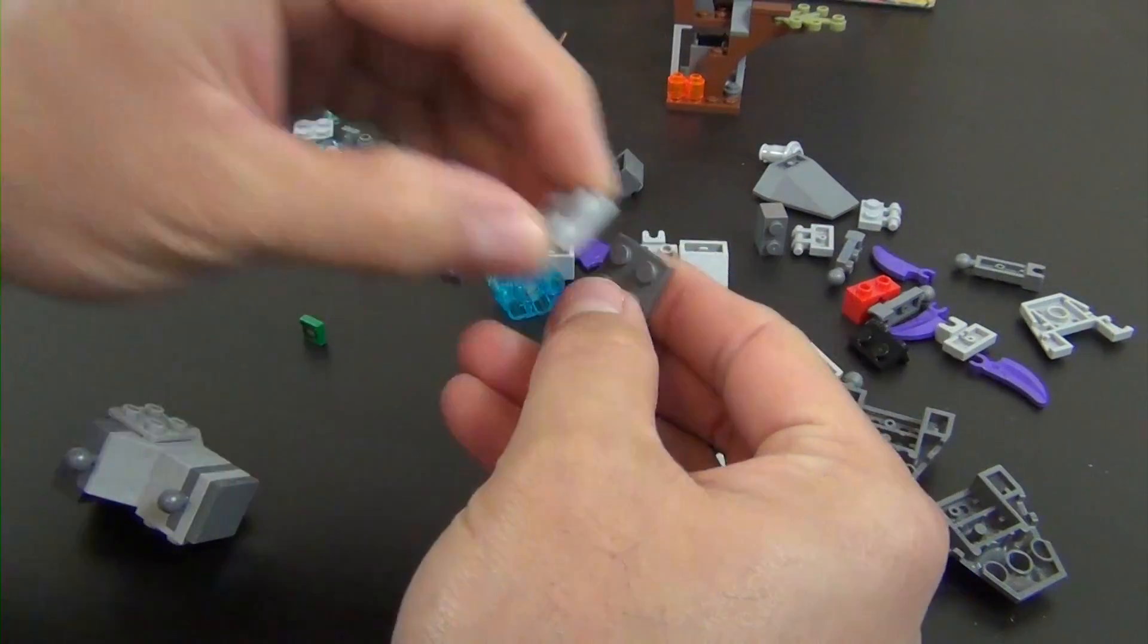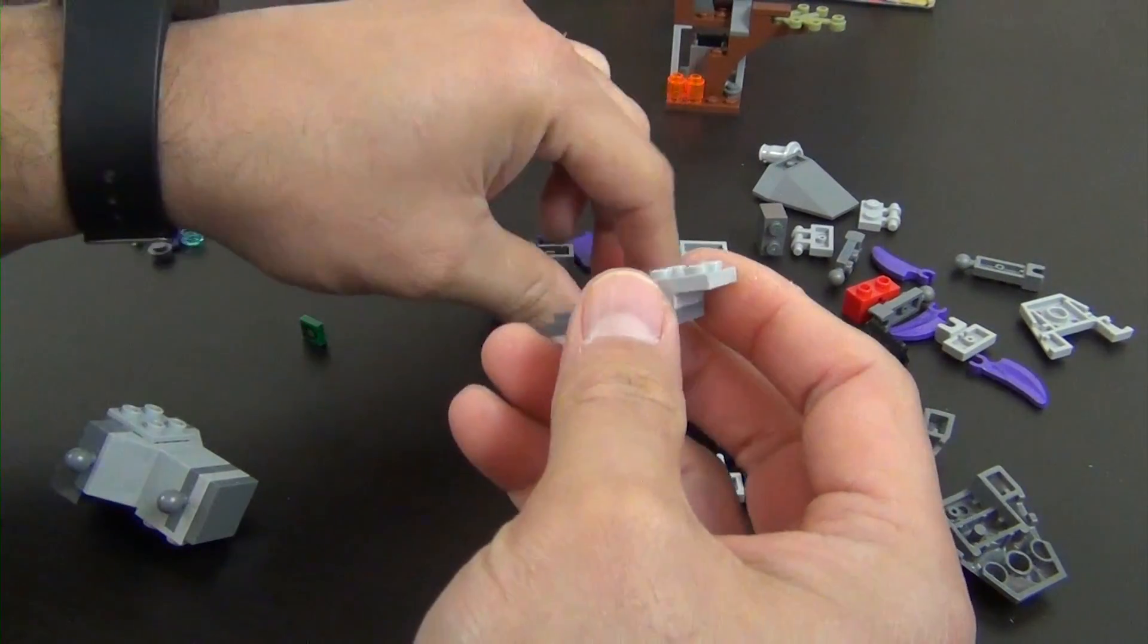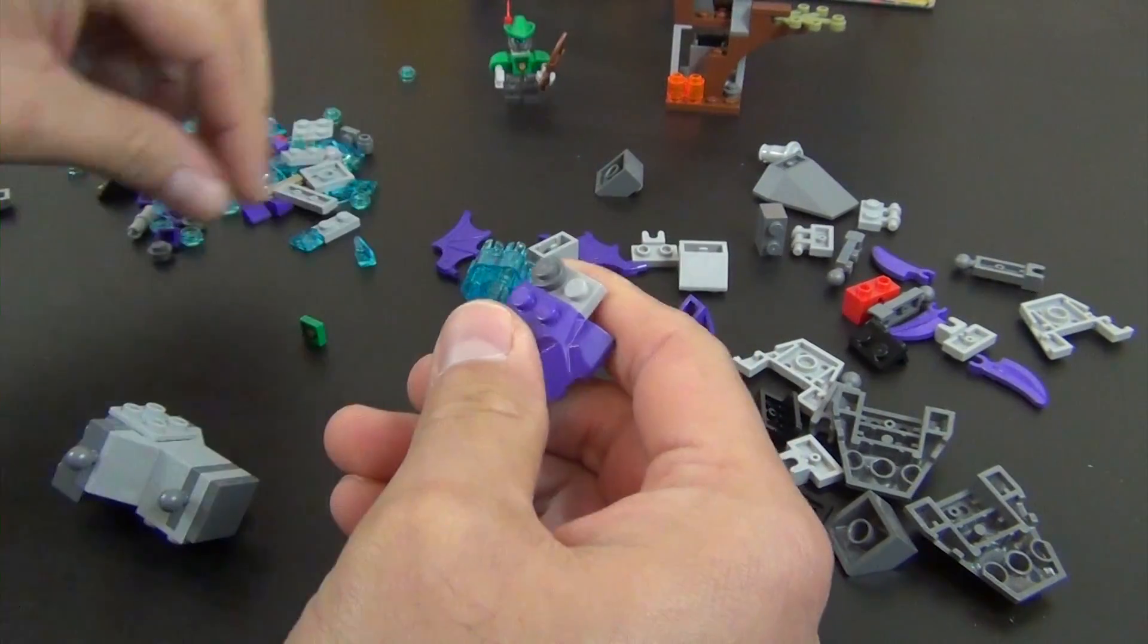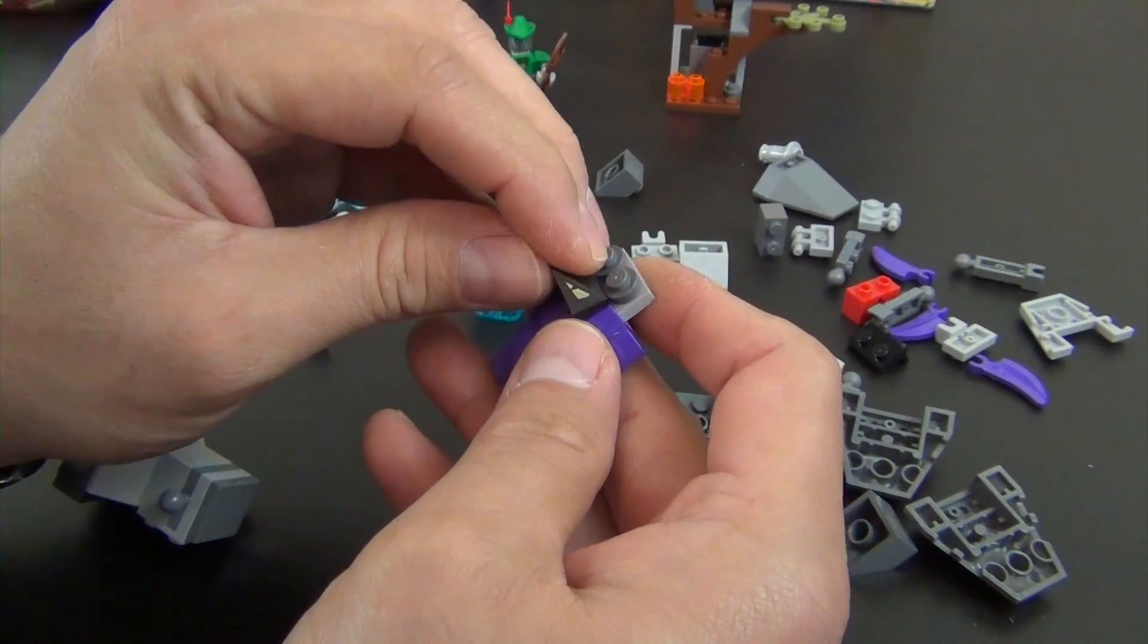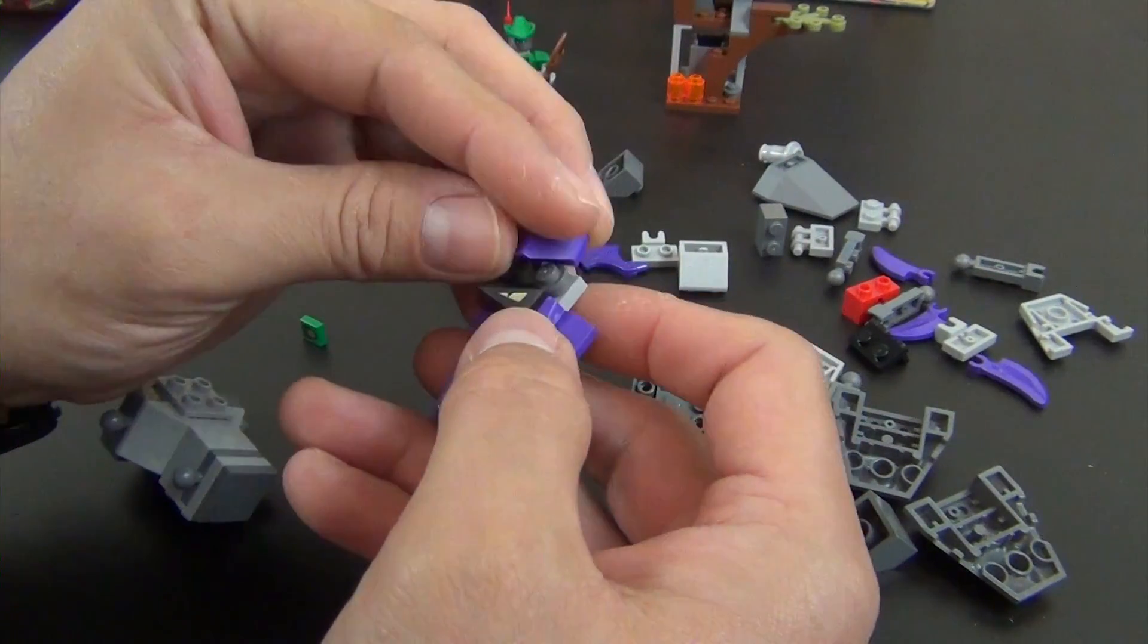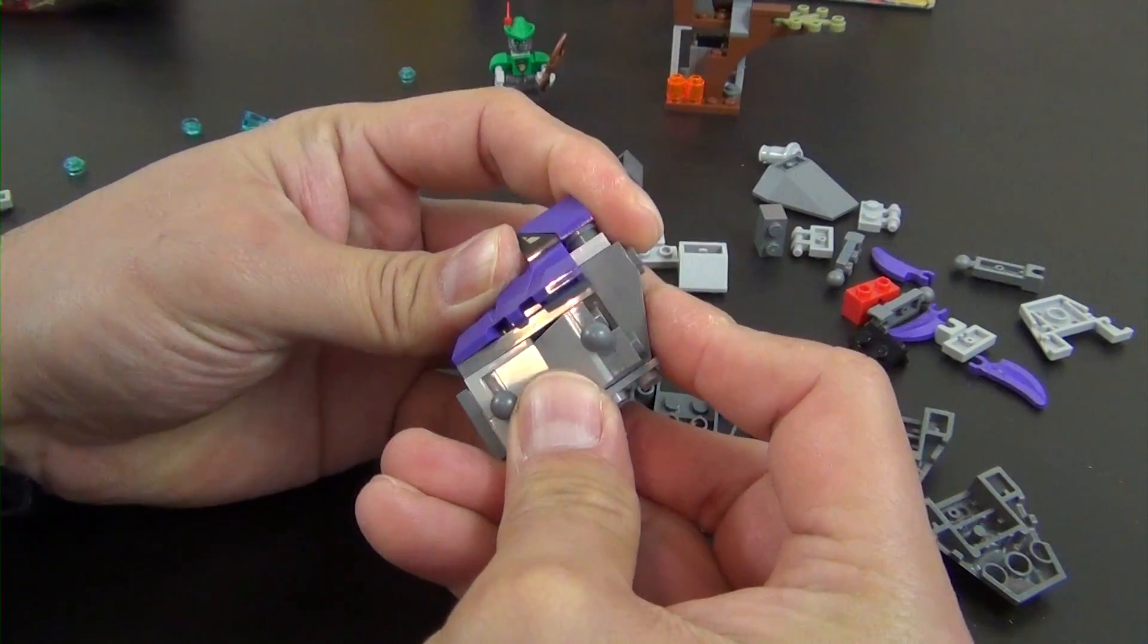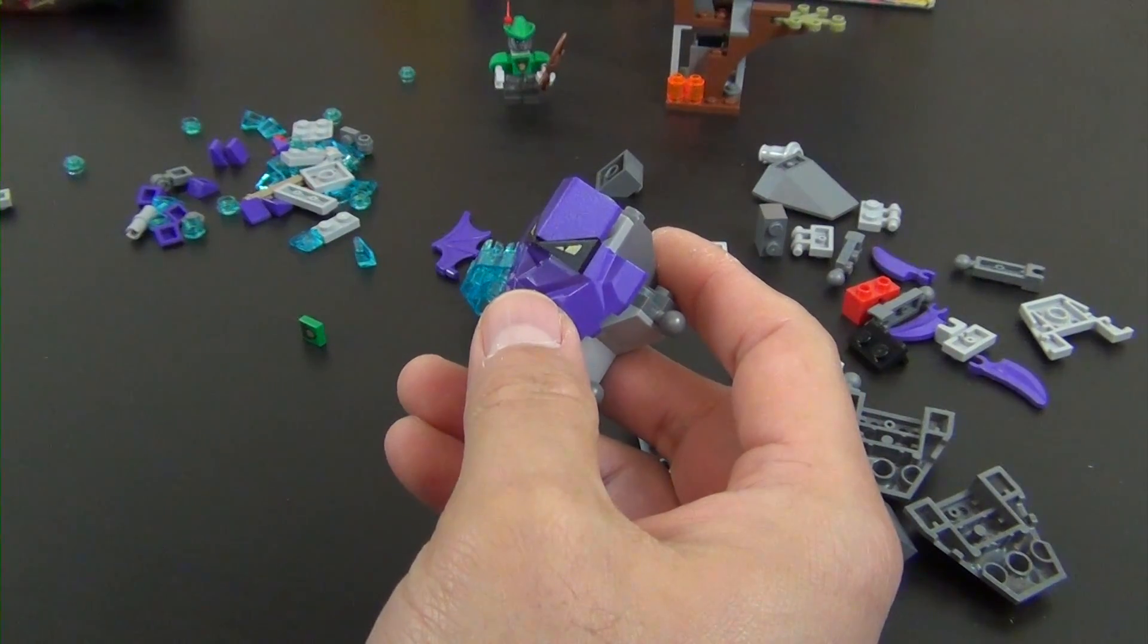Shows us putting that to the side for now. We have a little sub build to do. This purple jagged rock piece, some studs. We have a little pyramid slope that has printed eyes on it. That slope I think we saw in a Mighty Micro set, so it's not new, it's just kind of rare. That goes there. So that's like the body head combo piece.